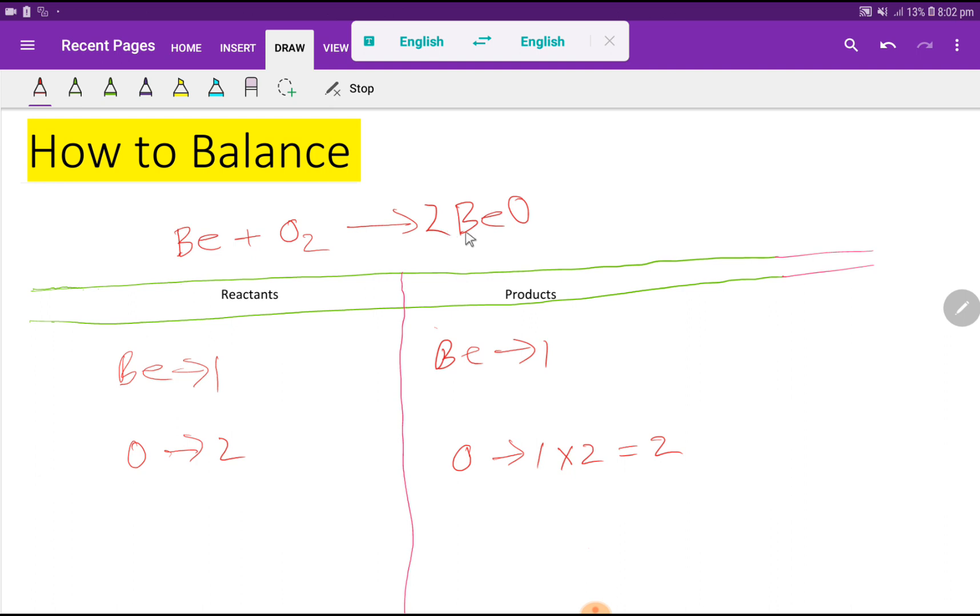If you place here 2, the number of beryllium will also be 2. Let me update the number of beryllium. Already we have balanced oxygen but a new problem has arised. Our beryllium has changed its balance.